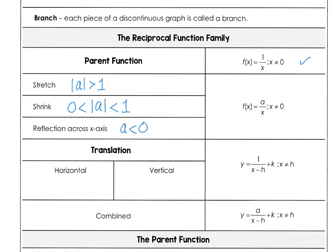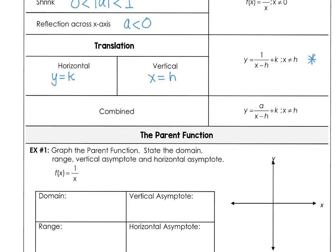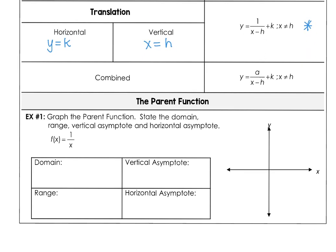Notice we're not putting absolute value bars around that a value. When we think about translations, when y equals k, that is a horizontal asymptote. And when x equals h, that gives us a vertical asymptote. Putting all of that together, you can have a combined translation formula where a will shrink, stretch, or reflect, and x minus h moves the graph to the right.